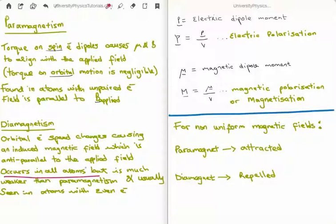Just as electric polarization equals the electric dipole moment per unit volume, similarly magnetization is the magnetic dipole moment per unit volume. For non-uniform magnetic fields, a paramagnet is attracted to the field whereas a diamagnet is repelled. Thanks for watching — please share with your friends, subscribe to the channel, and leave a comment below.